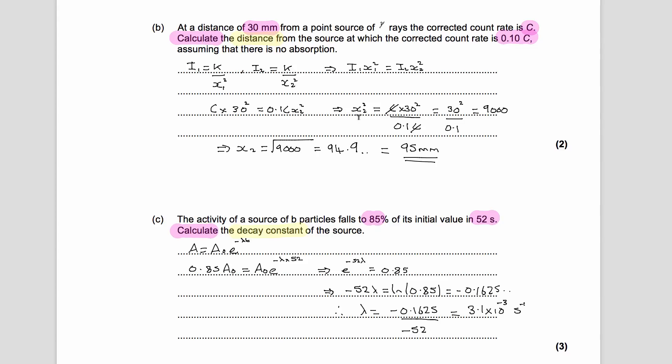If we rearrange this, we get our new distance X₂ but squared is equal to this, so it's equal to C times 30 squared divided by 0.1 C. The C's cancel out, which gives us basically 30 squared over 0.1, which gives us 9,000. But that's equal to the distance squared. We simply square root 9,000, which gives us 94.9, which is essentially 95 millimeters. In terms of two marks, basically if you try and use this equation here, you get one mark for attempting to use the inverse square law properly, one mark for the right answer.